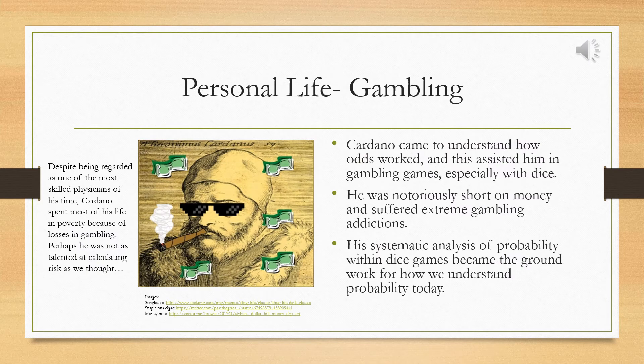Due to his work on probability, Cardano understood how odds worked and how likely events were to occur. This was both his rise and downfall. Cardano was notoriously short on money and developed a bad gambling addiction, particularly with dice games. This addiction was fueled by his systematic analysis and understanding of probability, and this analysis has become the groundwork for all probability work in modern mathematics.